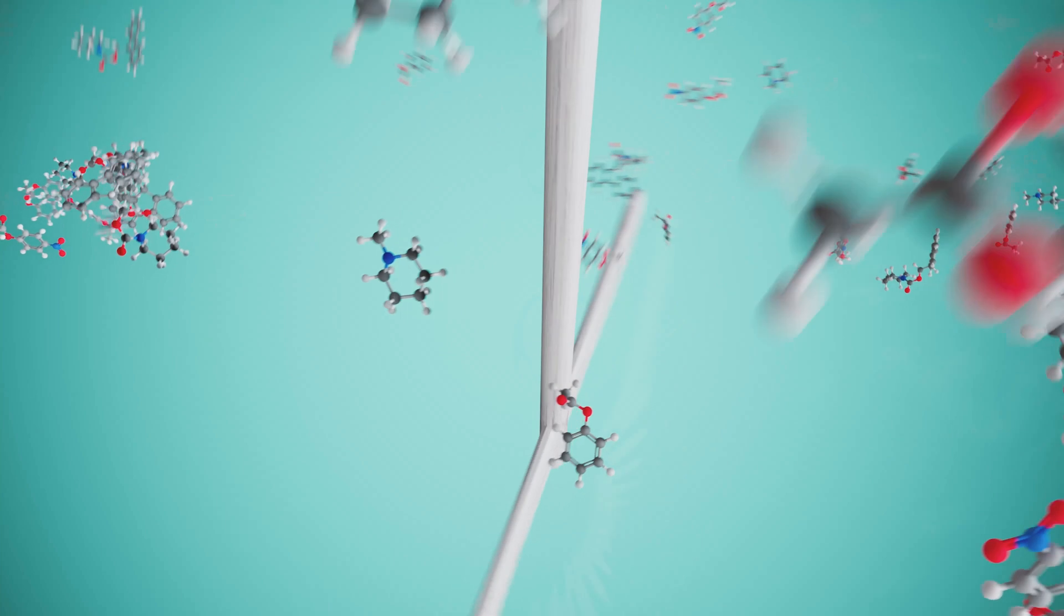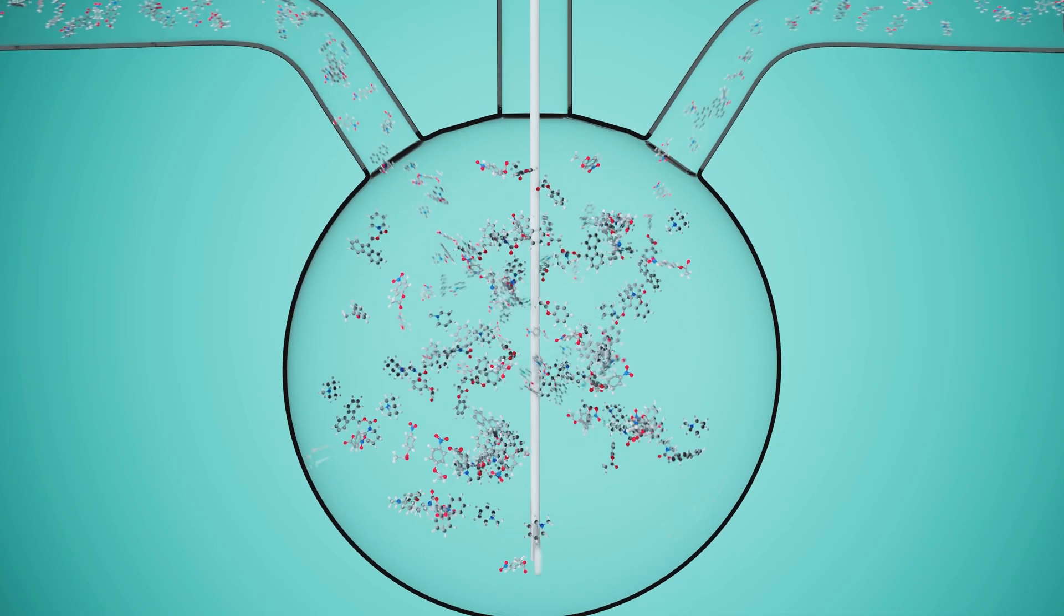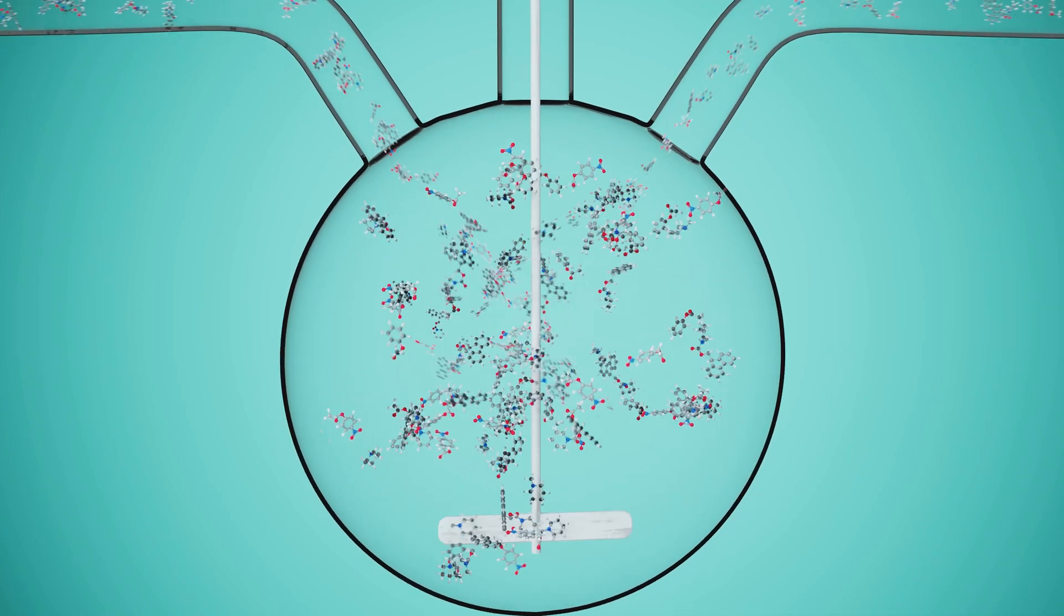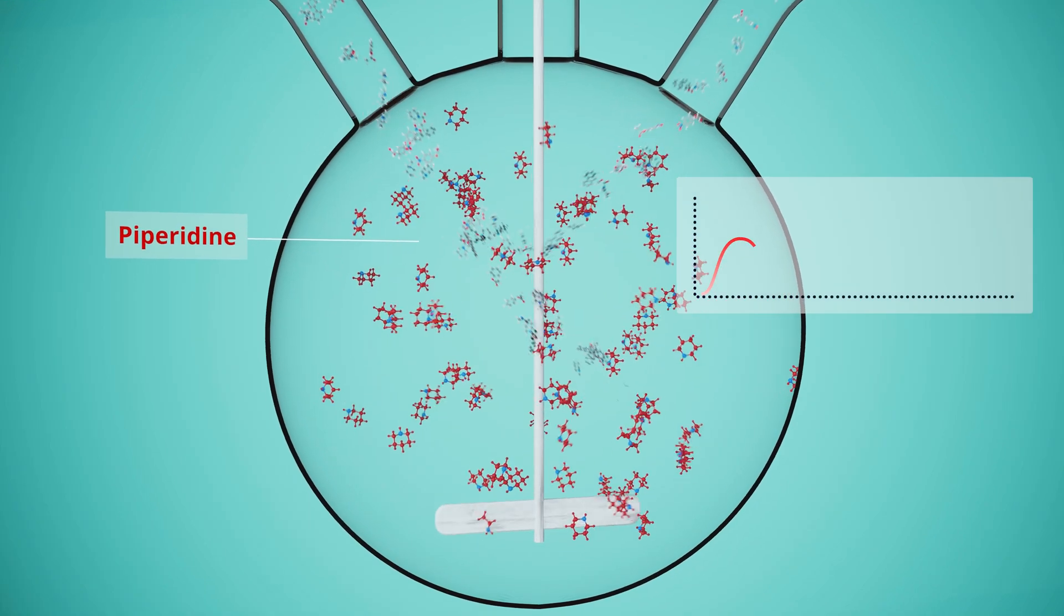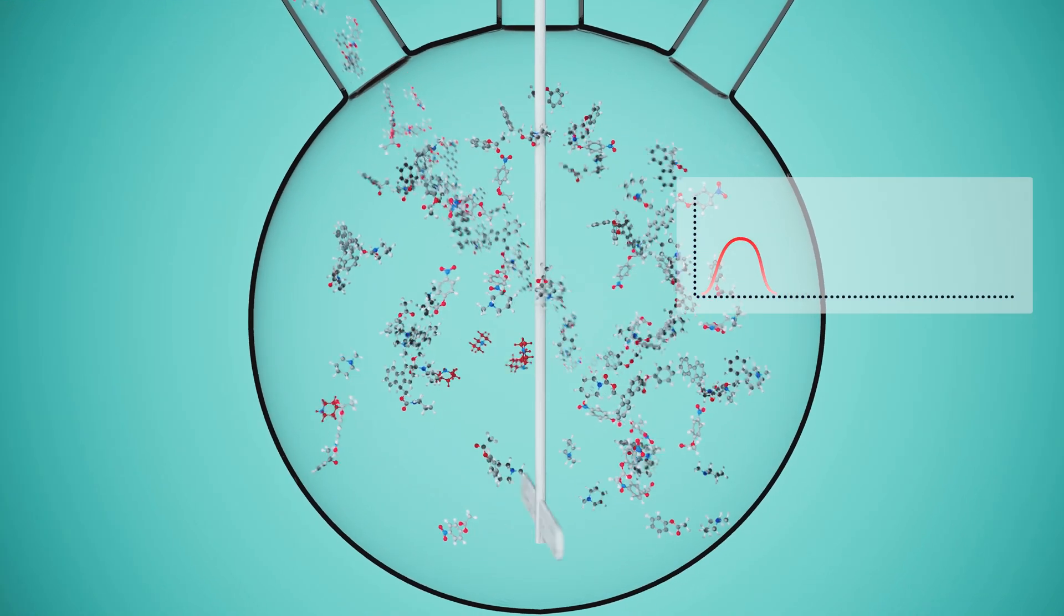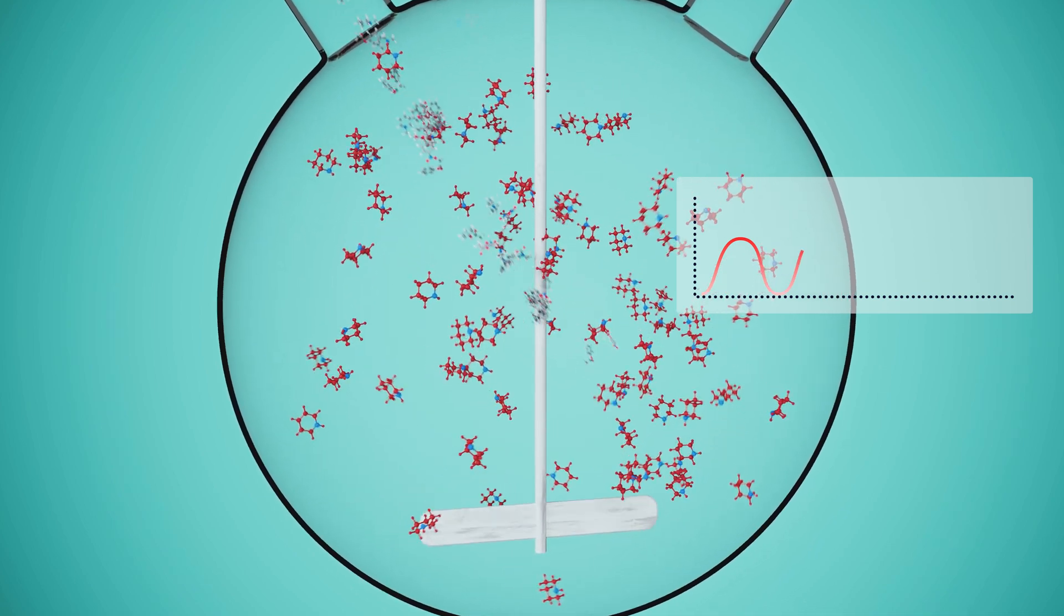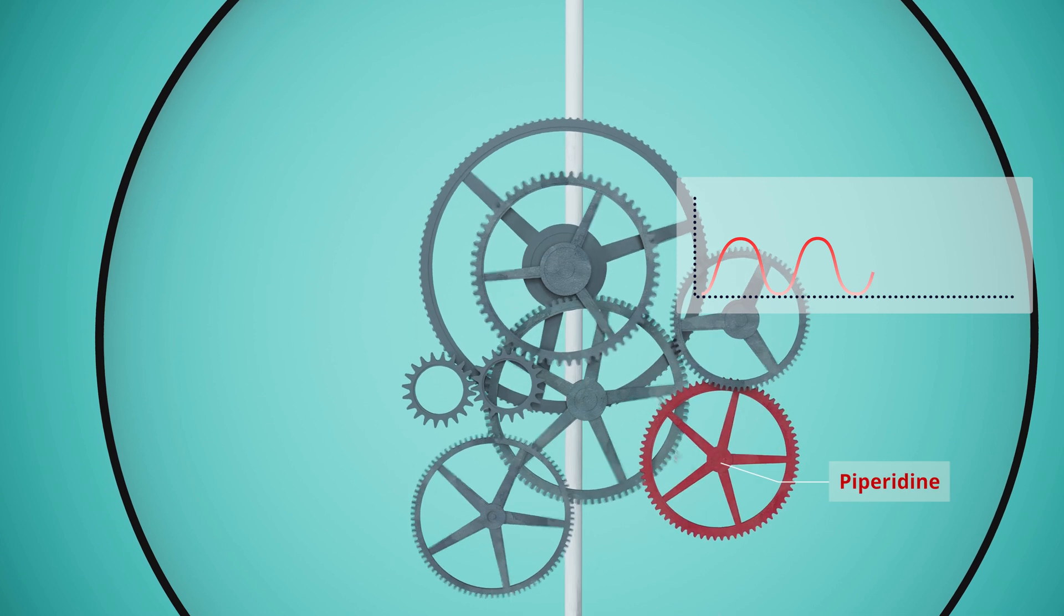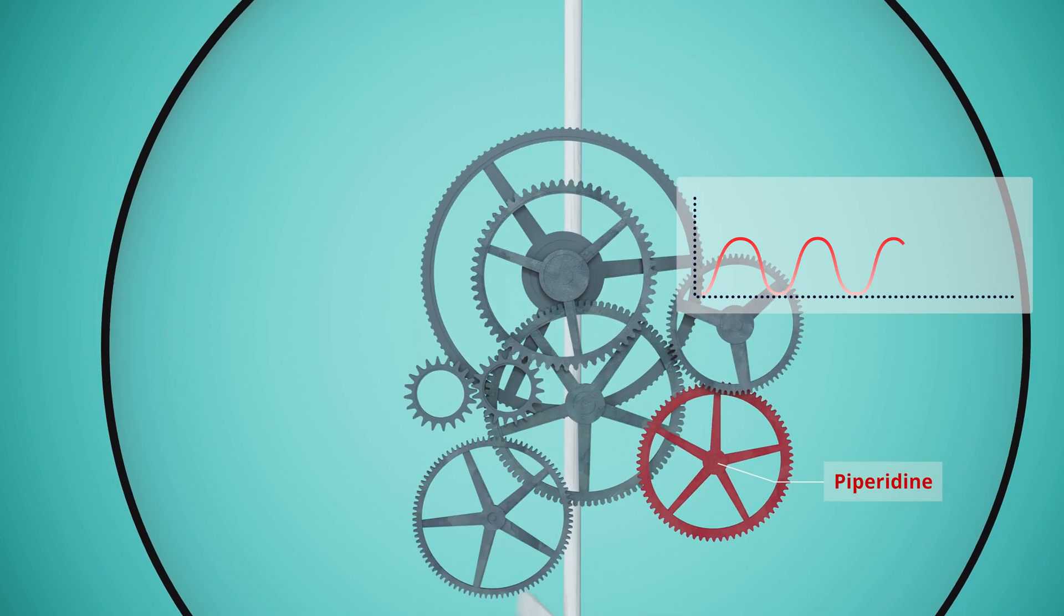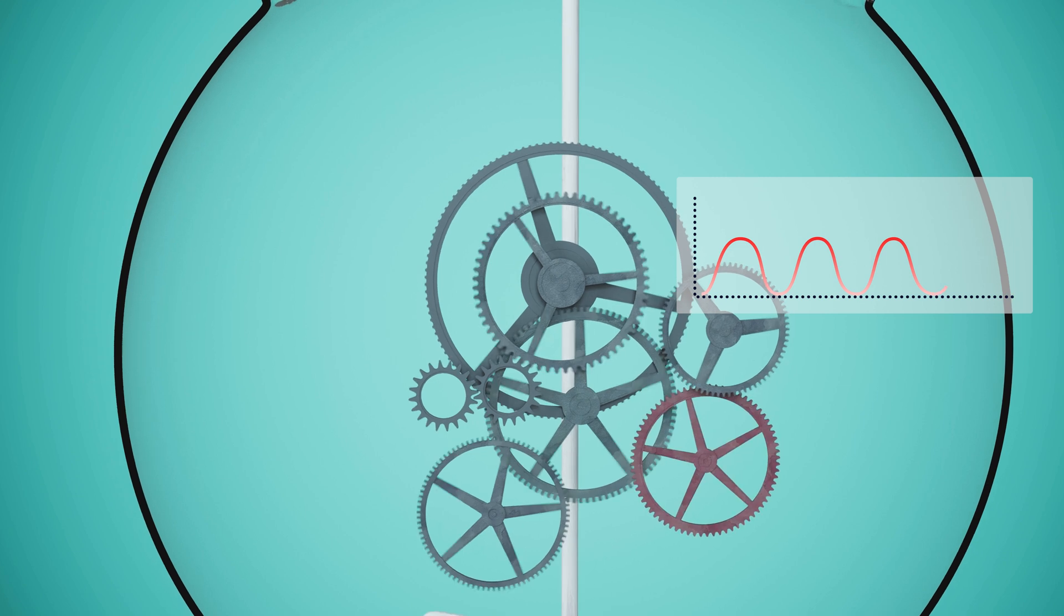The molecules form a complex system that causes the concentration of a molecule called piperidine to increase and decrease. This happens repeatedly and regularly, like clockwork. This type of system is therefore a chemical oscillator.